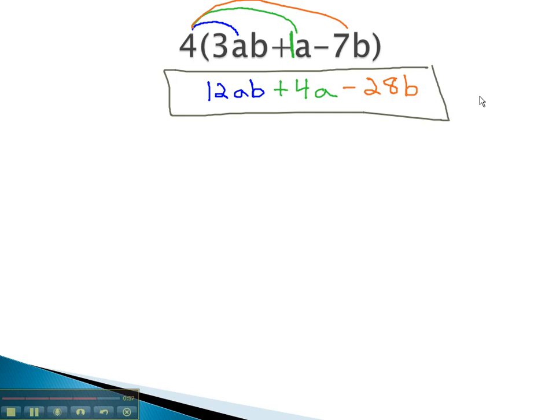The distributive property, quite simply, requires us to multiply the front number by every term inside the parentheses.